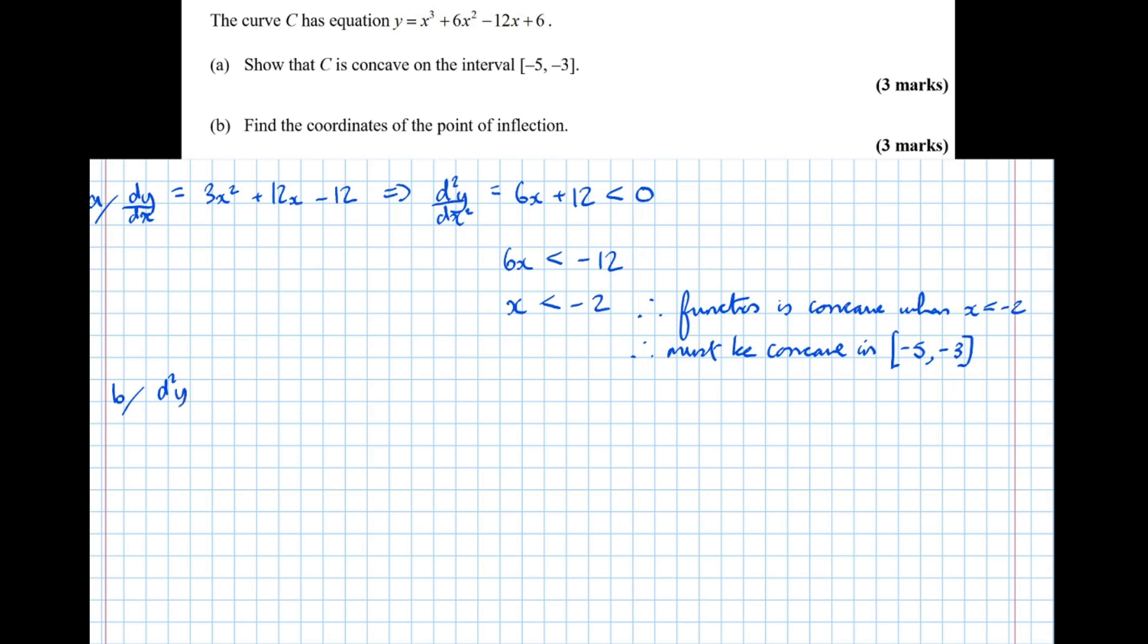So we've worked out that d2y by dx squared equals 6x plus 12, which must equal 0. Which means 6x equals minus 12. Which means that x equals minus 12 over 6 equals minus 2.